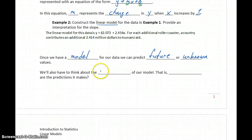But as we're predicting unknown values, we always have to think about the accuracy of our model, which is essentially answering the question, how good are the predictions it makes?